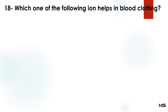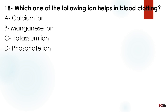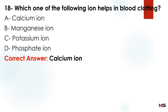Which one of the following ions helps in blood clotting? Option A: calcium ion, Option B: manganese ion, Option C: potassium ion, Option D: phosphate ion. The correct answer is option A — calcium ion.